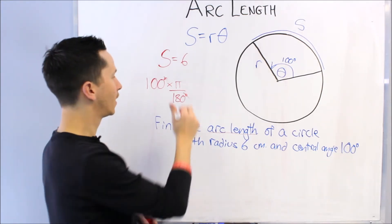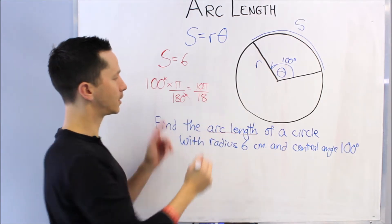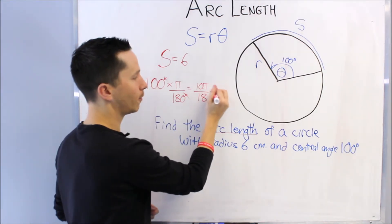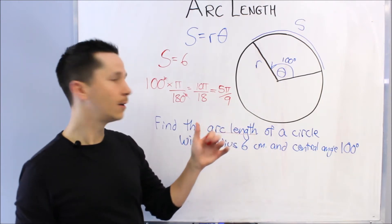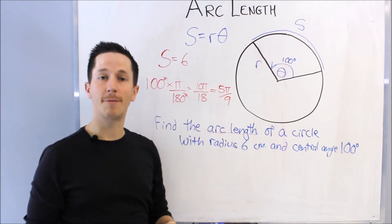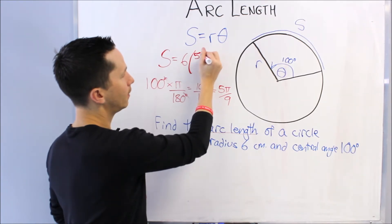This can be reduced further to 5π over 9. So this is my central angle: 100 degrees is the same as 5π over 9 radians. So I'm just going to drop 5π over 9 in here, and we can keep an exact value. I'm just going to multiply the 6 to the 5, and we get 30π over 9.